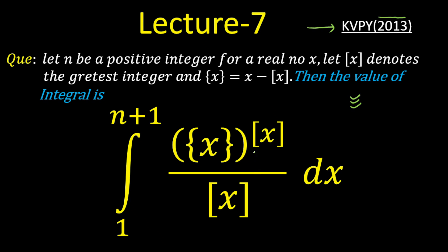The question uses the flower bracket { } to denote the fractional part of x, and the square bracket [ ] to denote the greatest integer function of x. You have to find the value of the integration from 1 to n+1 of the fractional part of x raised to the power [x], whole divided by [x], dx.